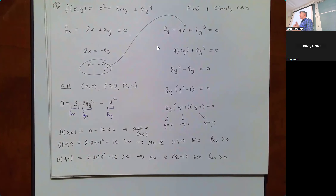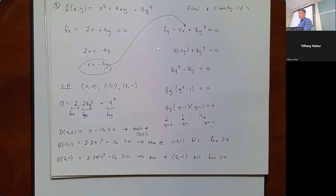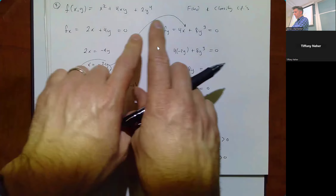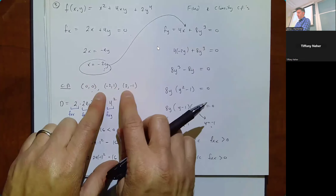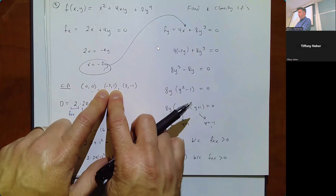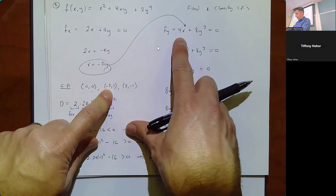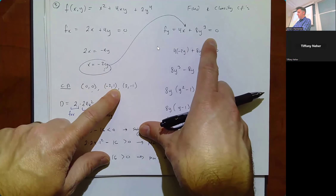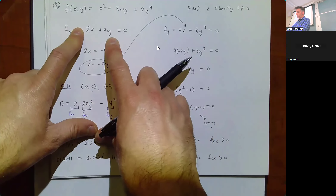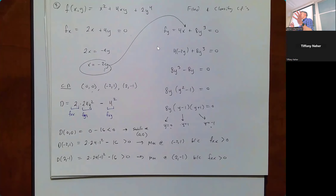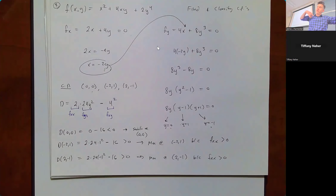You're really making sure both equations are simultaneously zero. Checking: plug (0,0) — both are zero. Plug (-2, 1) — -4 + 4 = 0 and -8 + 8 = 0. Plug (2, -1) — 4 - 4 = 0 and 8 - 8 = 0. So you're taking solutions from one equation and verifying they satisfy the other.